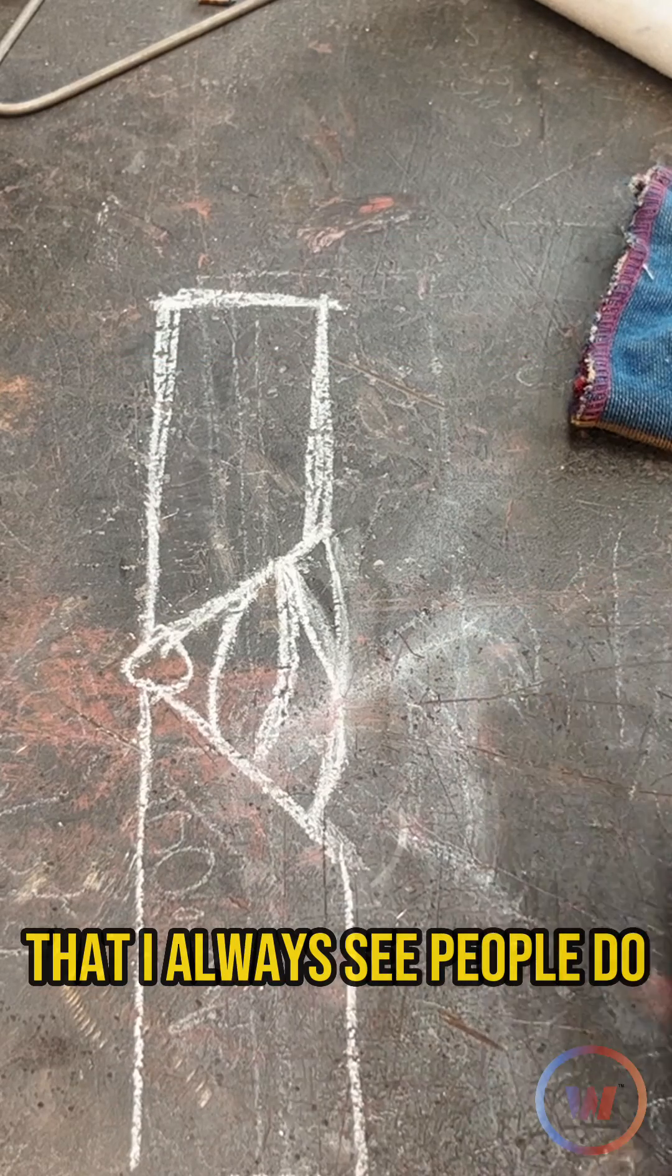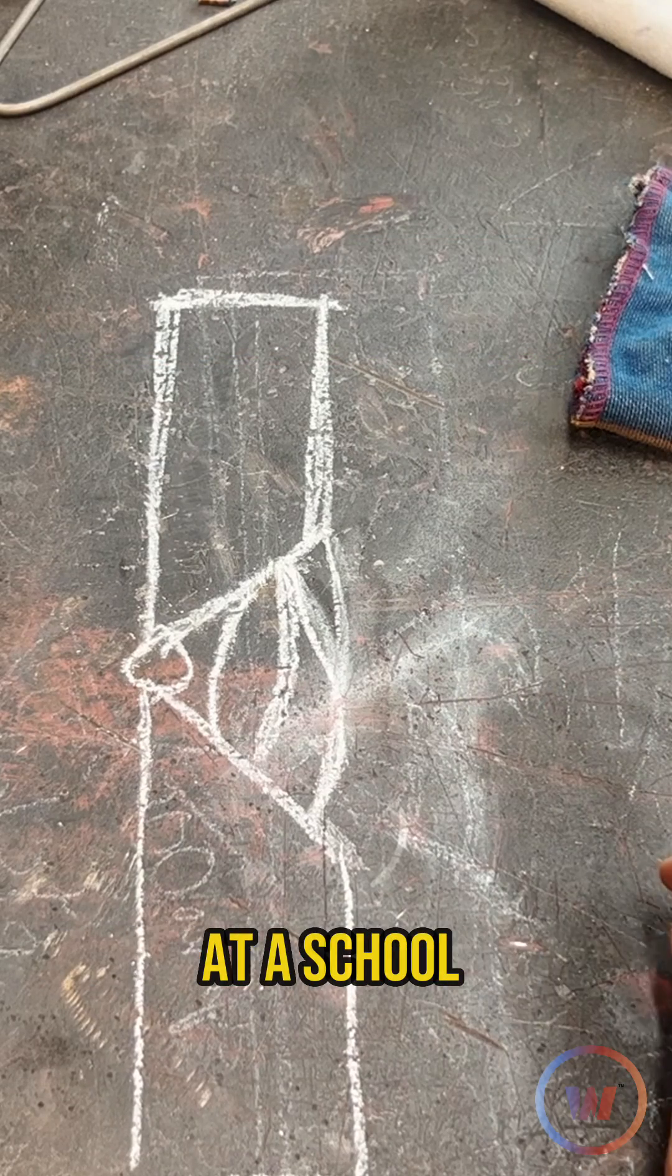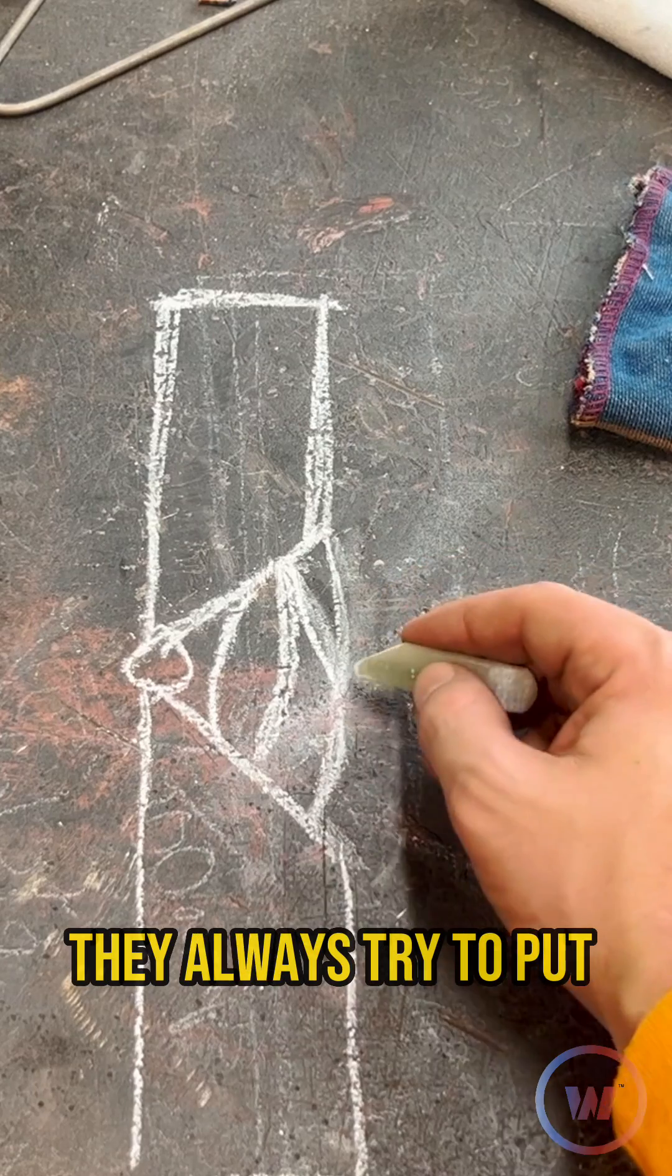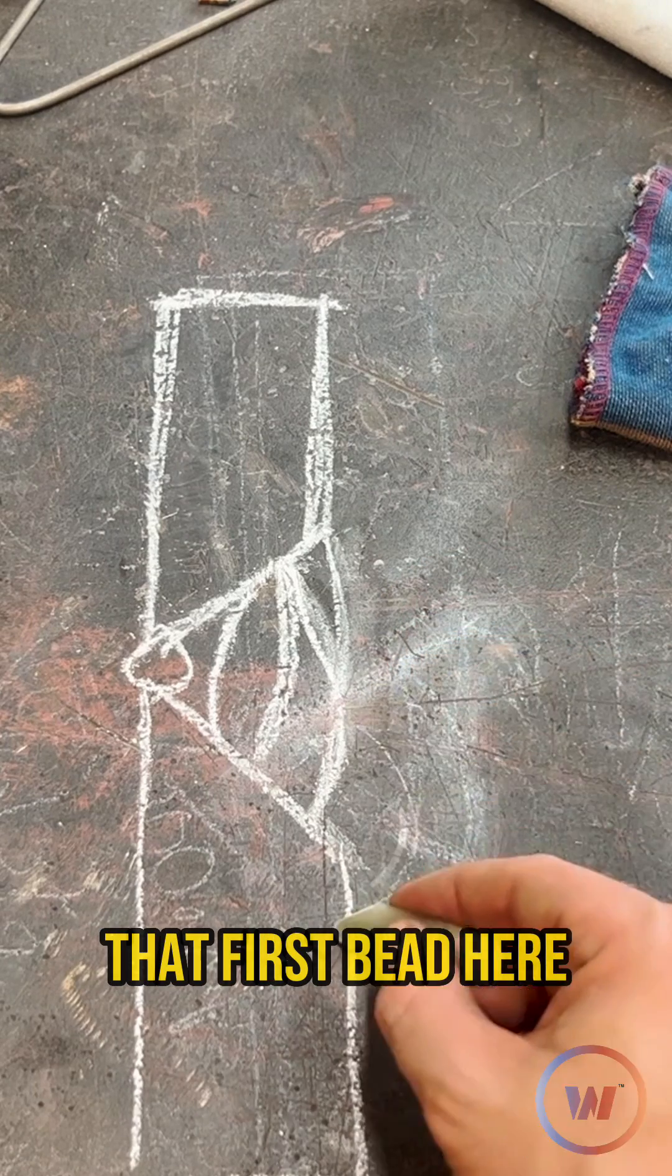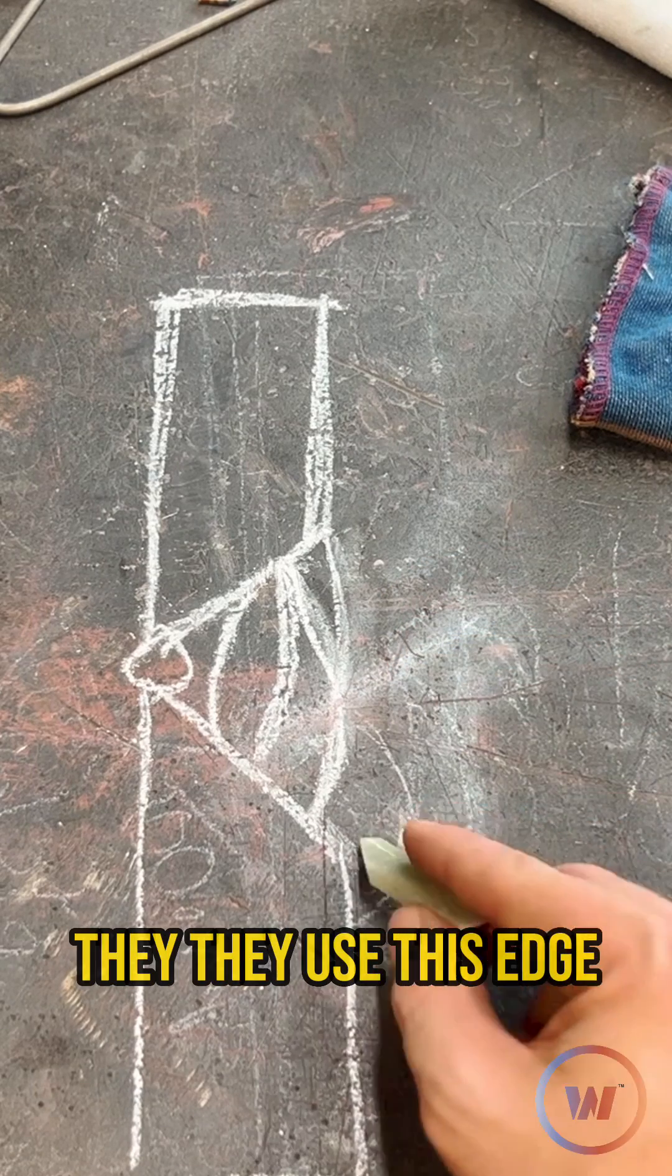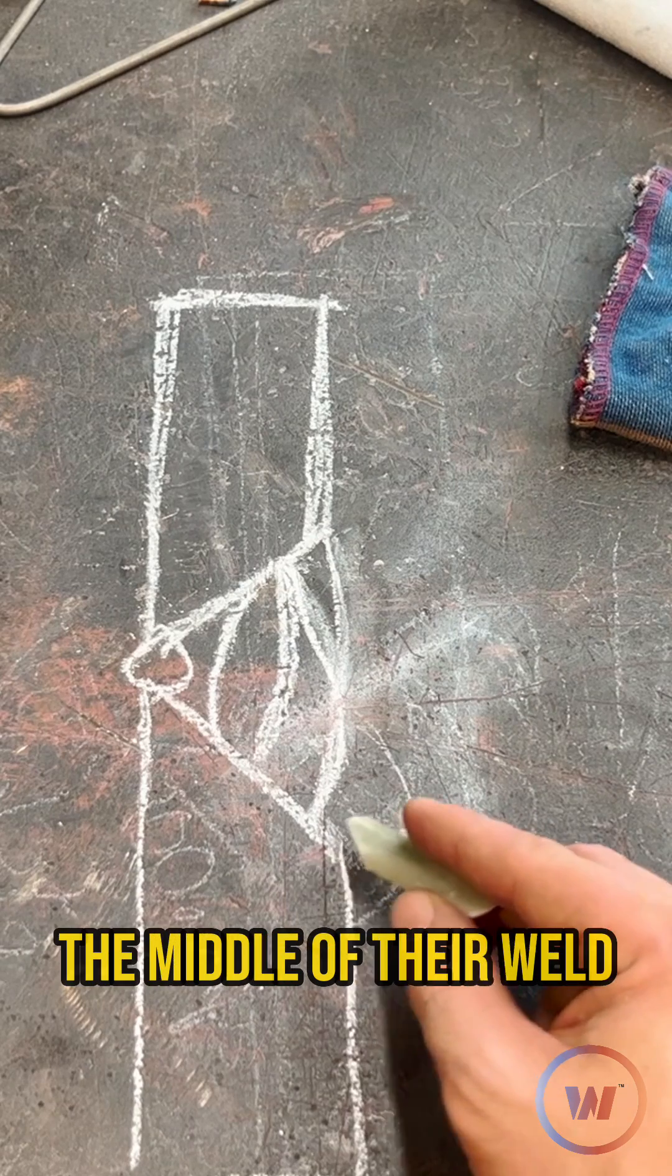These are the mistakes that I always see people do as far as teaching at a school and seeing students. They always try to put that first bead here. They use this edge as the guide for the middle of their weld.